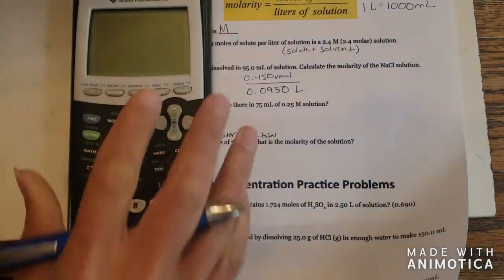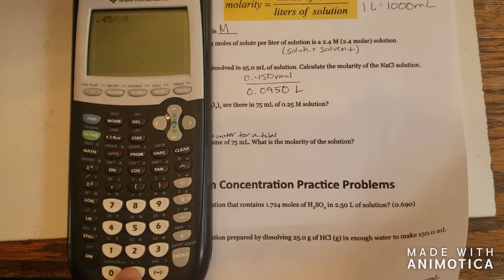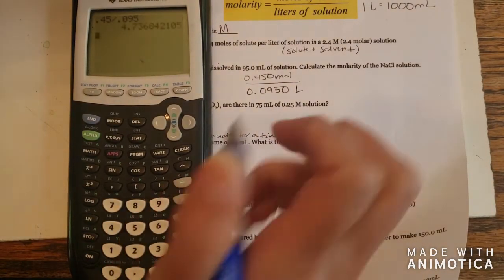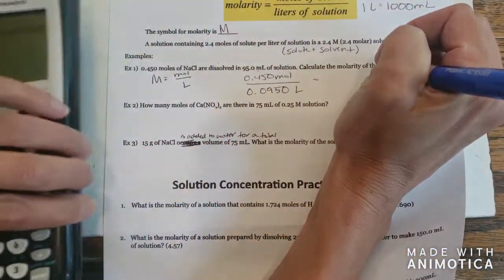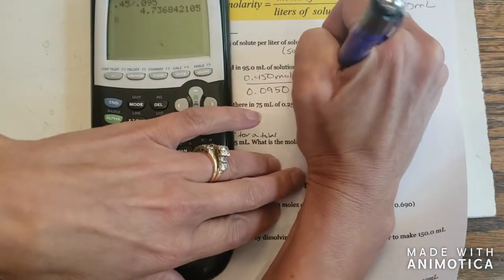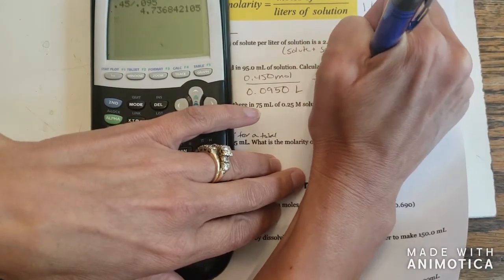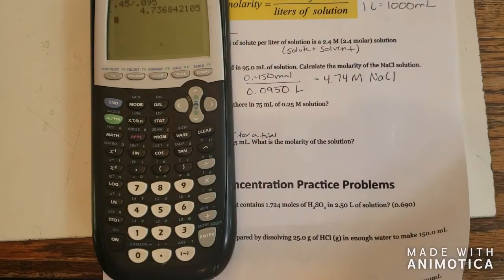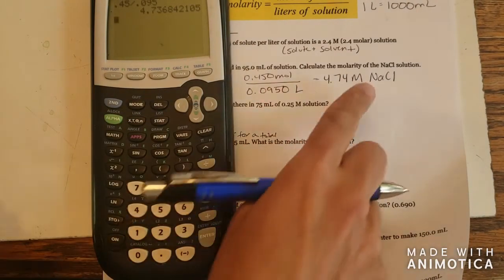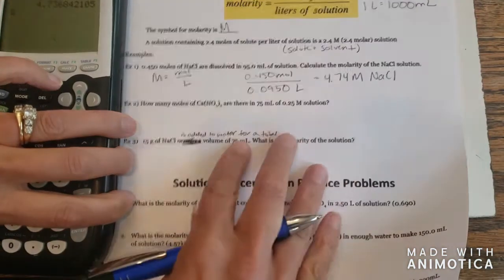So we're going to divide these two. And we have, with three significant figures, 4.74 molar sodium chloride solution. So we label our solutions with the solute's formula.